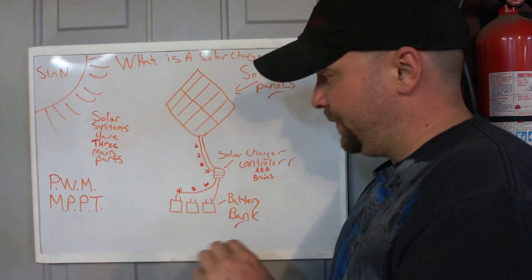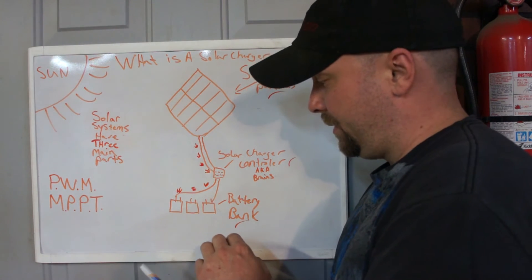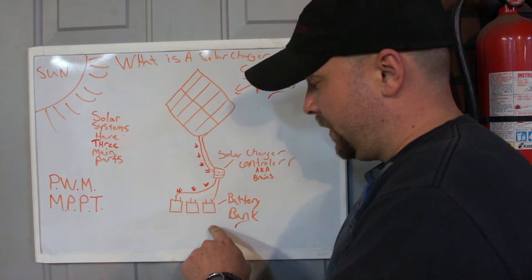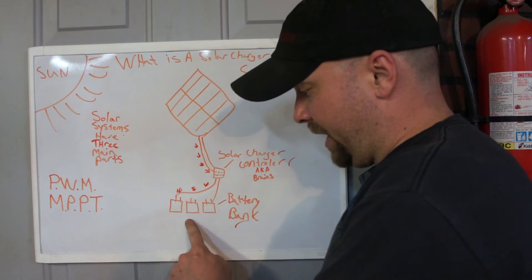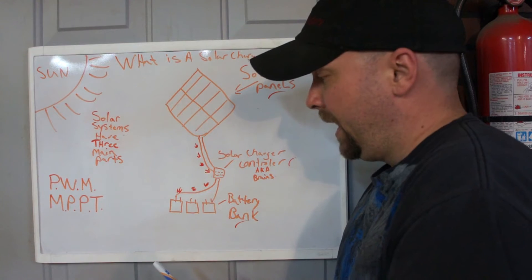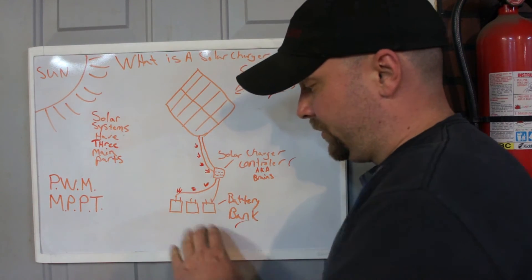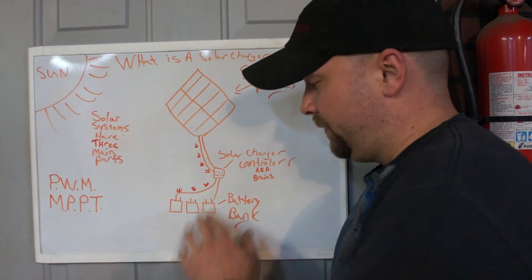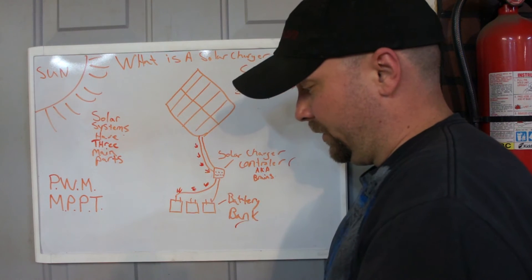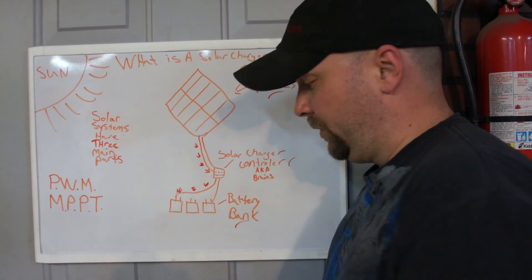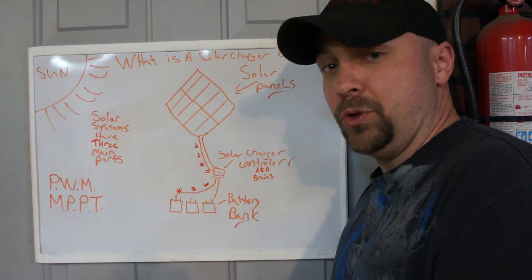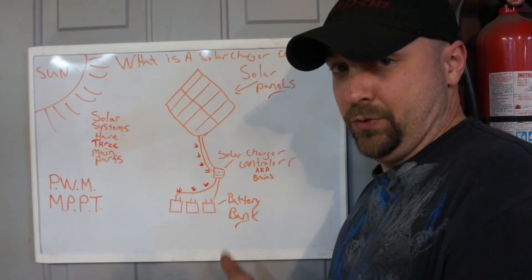So you also end up with another scenario: your batteries will become fully charged, and now you no longer want to overcharge your batteries. If you didn't have a solar charger controller in the loop, you would effectively boil your batteries and damage your batteries by overcharging your batteries.